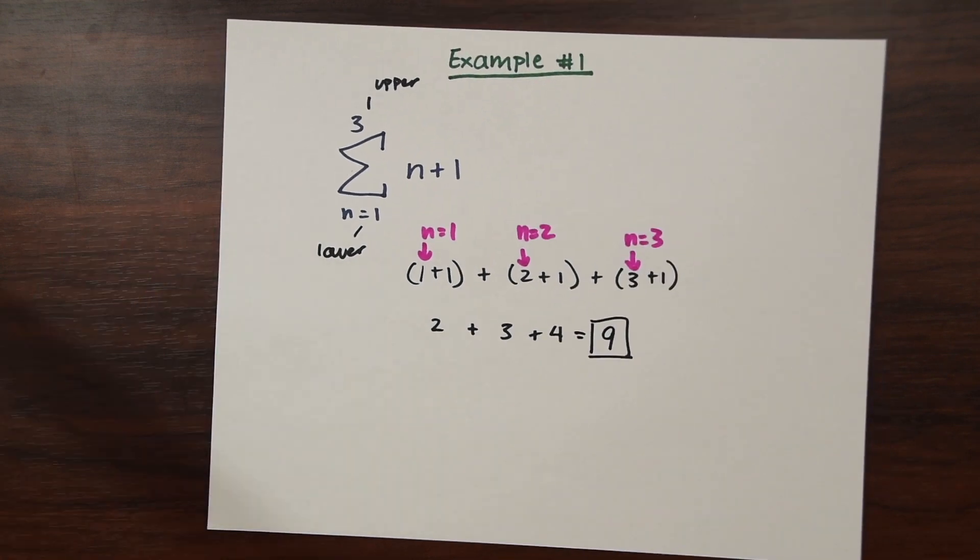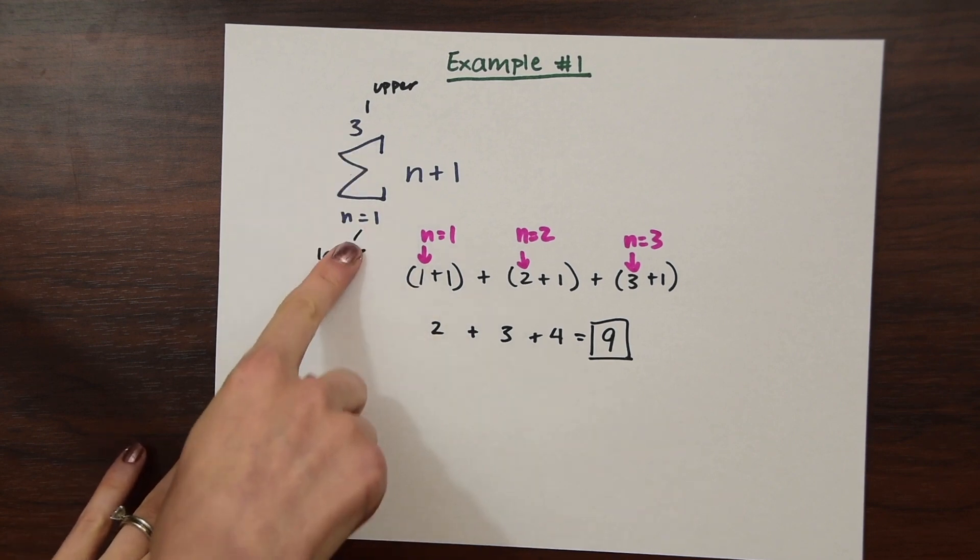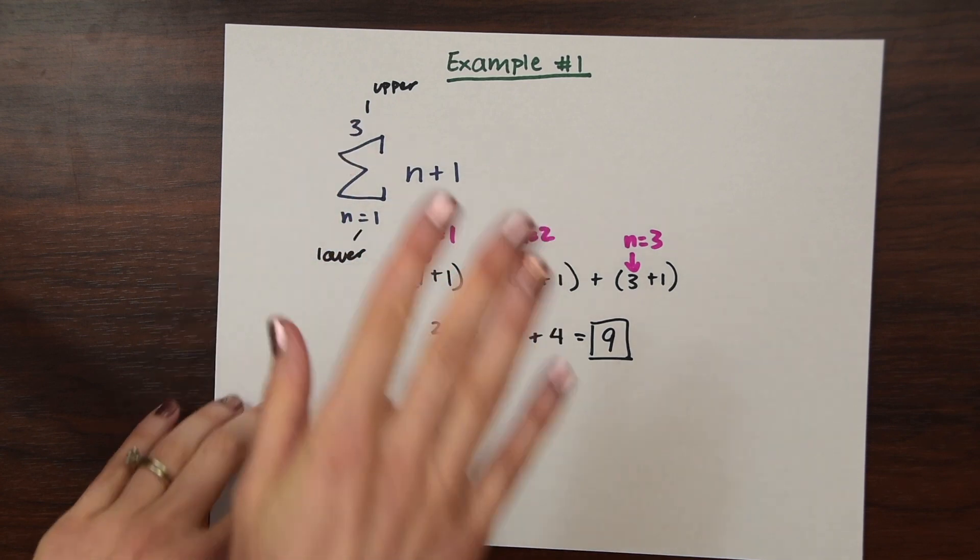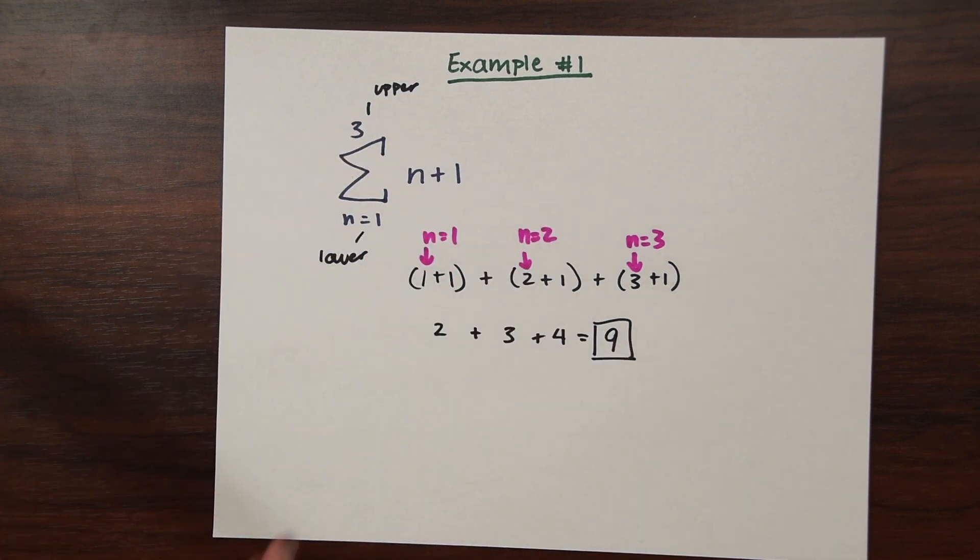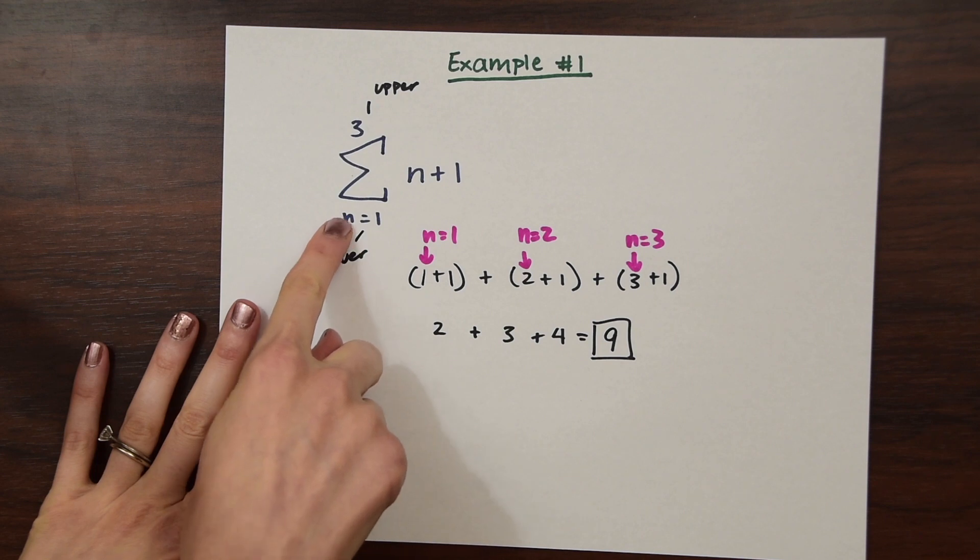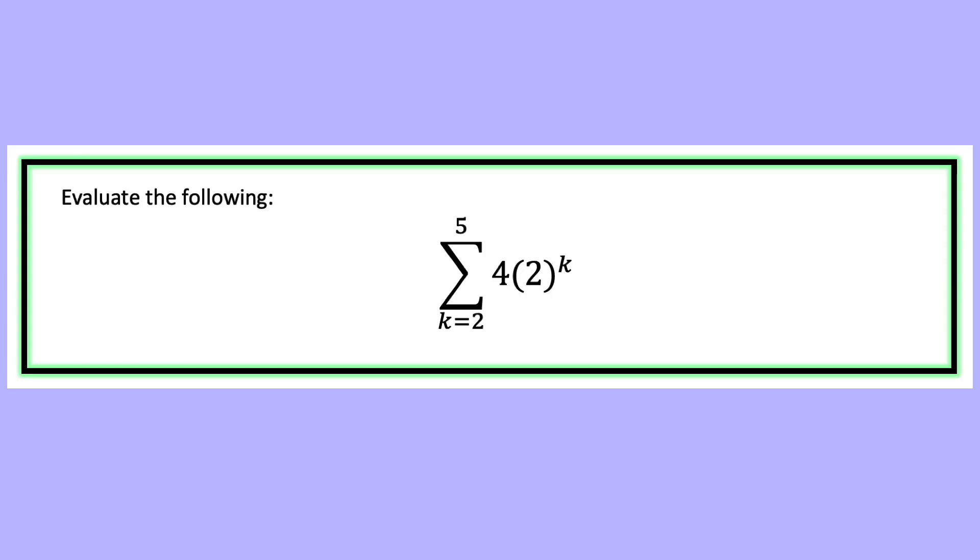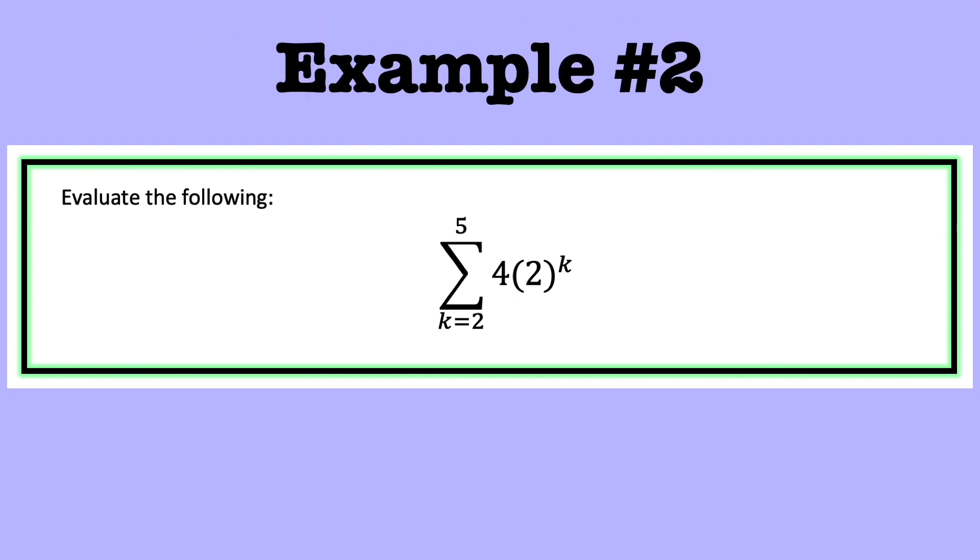So summation notation isn't hard. It's all about summing and arithmetic. The only thing is you just have to know how to read it. Be aware of what is the lower limit and the upper limit and what you need to plug in for n. And these can be different values too. This could be a k and then you have a k here. So actually let's look at an example that involves k.